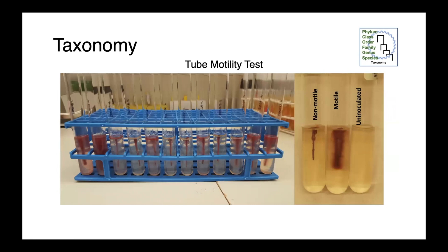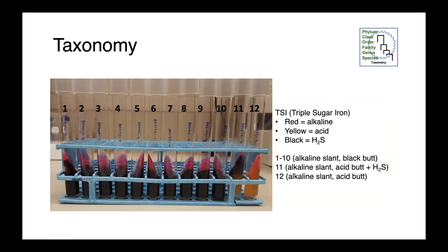The tube motility test can also be very useful. Some Enterobacteriales are motile; some are non-motile. What we're looking for is whether bacteria spread out from a stab inoculation into semi-solid media. Here we have an uninoculated tube with no purple growth. A non-motile organism stays confined to the stab point, while a motile bacterium very clearly swims out into the media, giving a fuzzy appearance. The TSI slant, or triple sugar iron tubes, are also frequently used — this media allows us to assay for acid or alkaline metabolic byproducts, hydrogen sulfide production, and gas production.